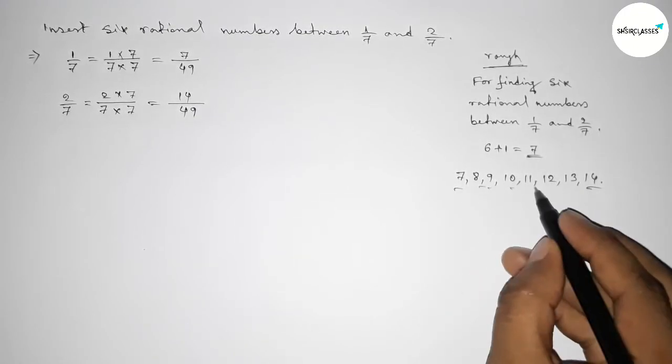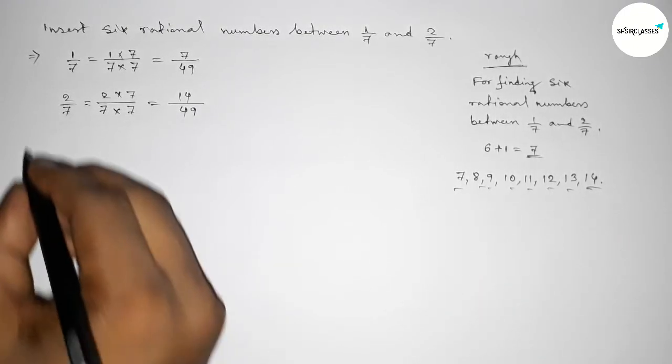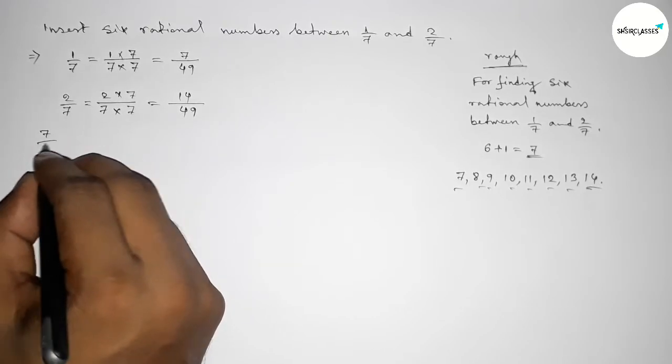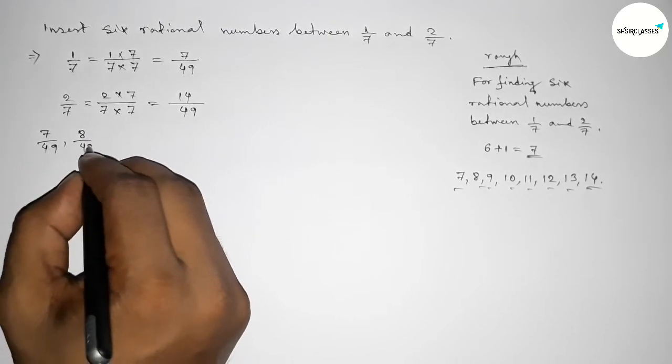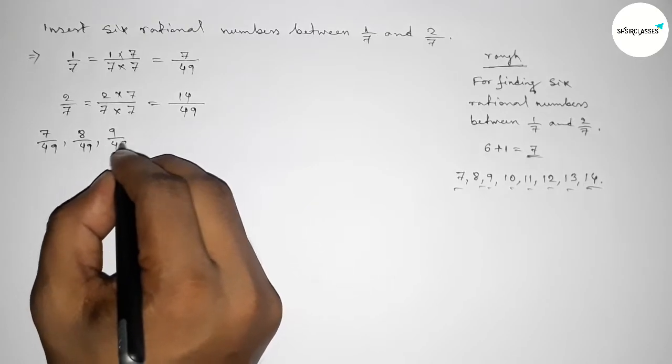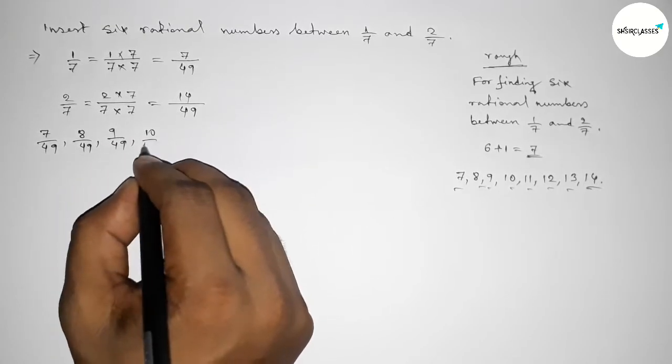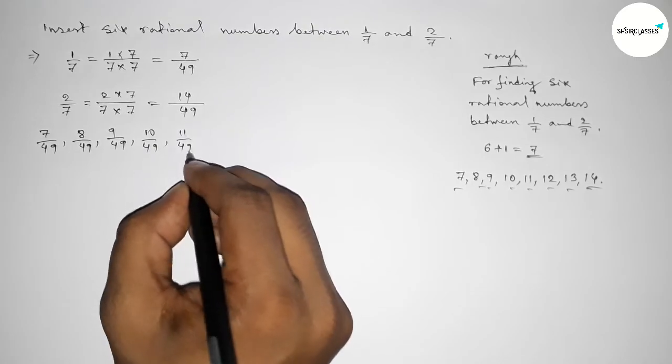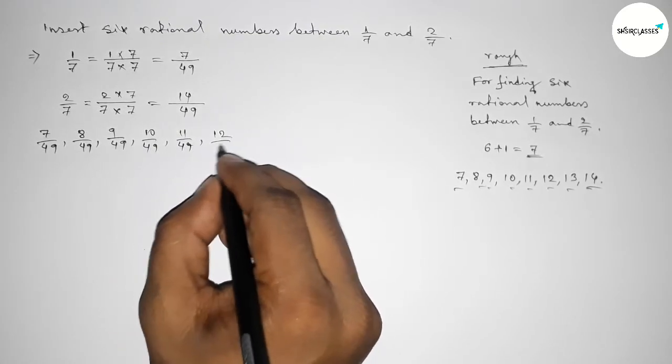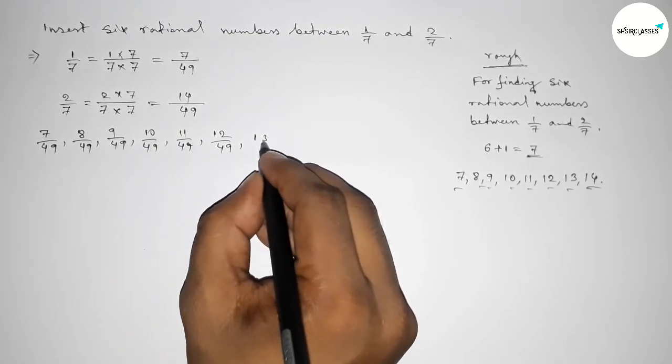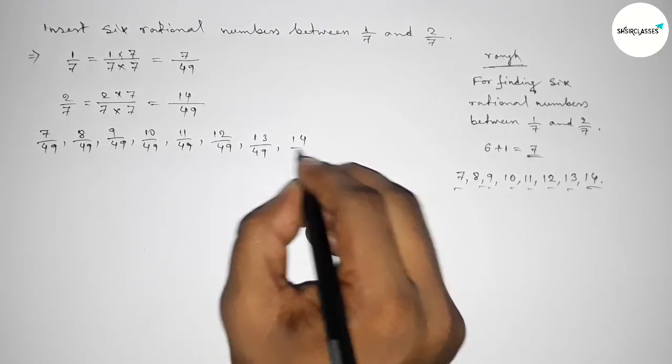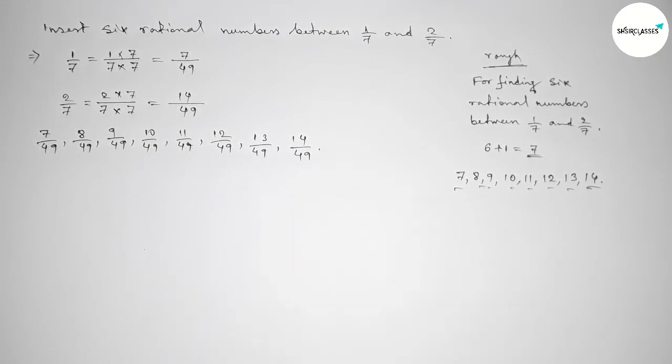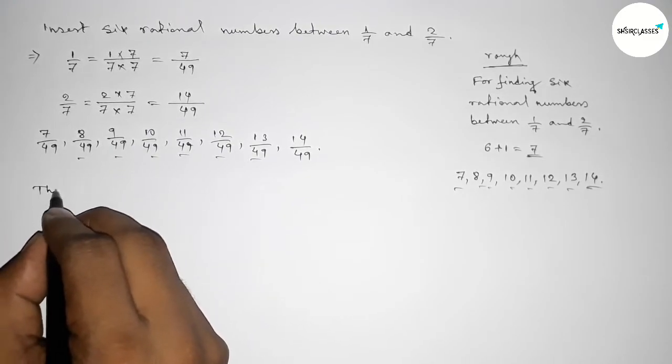Now first we have to form all the rational numbers here. So first one is 7/49, then 8/49, then 9/49, then 10/49, then 11/49 up to 14/49. And between these, these are the required six rational numbers between 1/7 and 2/7.